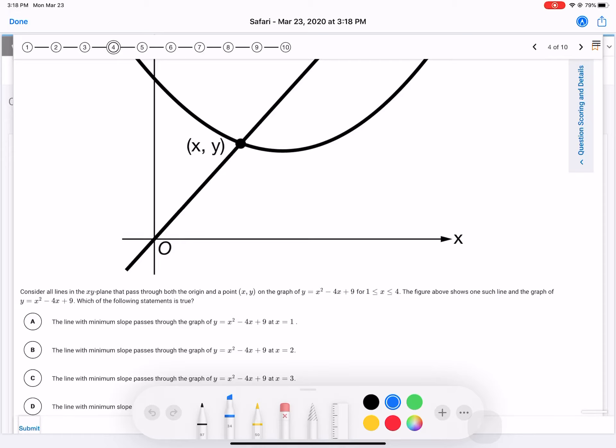Okay, this is problem number 4. Consider all the lines in the x and y plane that passes through the origin and a point x,y on the graph y equals x squared minus 4x plus 9, between 1 and 4. The figure above shows one such line on the graph, and the graph is this parabola y equals x squared minus 4x plus 9. Which of the following statements is true?